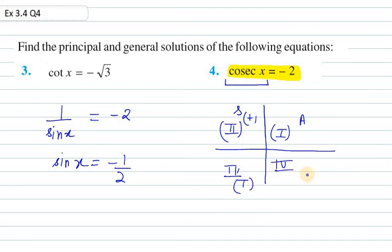In the fourth quadrant we have cos and sec. They are positive.